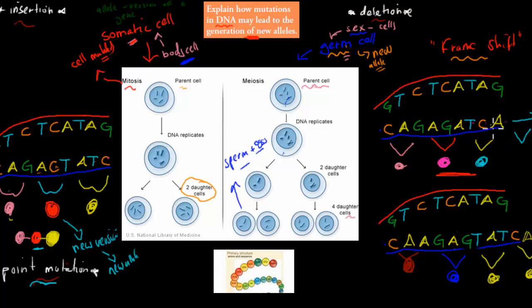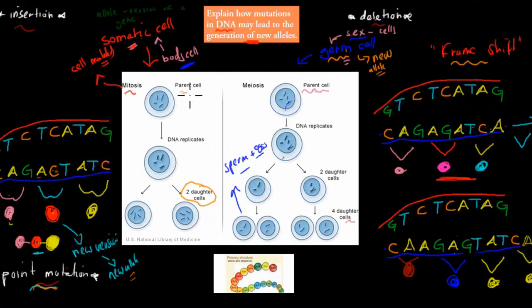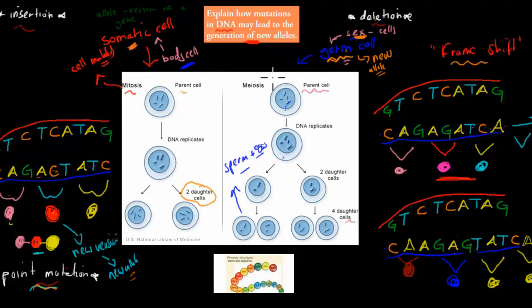Point mutations, where one base gets changed, are usually not too bad — you might have one amino acid different from the original, giving a new allele that is just slightly different. When you have a different sequence of amino acids, you're going to have a different arrangement of the protein. That's how a mutation in DNA can lead to new generations of alleles by shifting which amino acid gets produced. Remember: for mutations to be passed on to the next generation, they have to happen in the germ cells — the sex cells. If they happen in the somatic cells, the individual will be affected but it won't be passed on. I hope that was useful — thank you for watching.